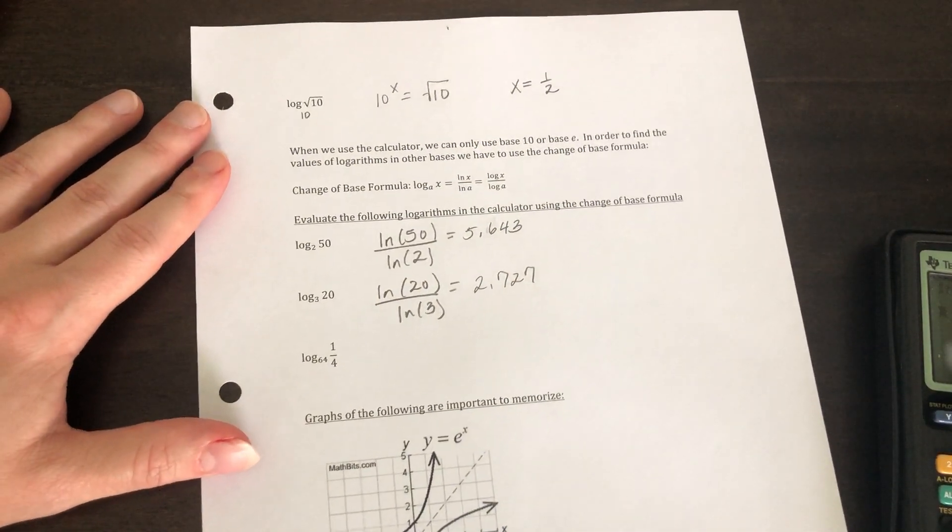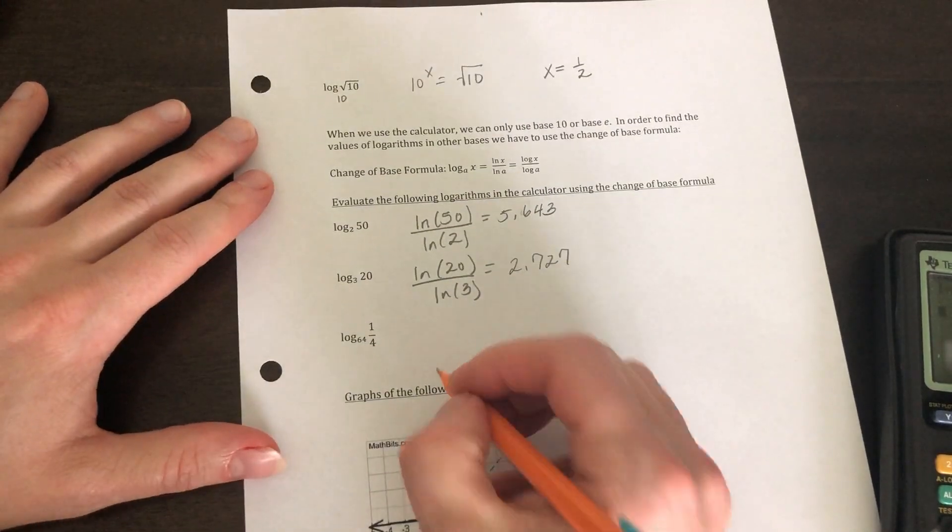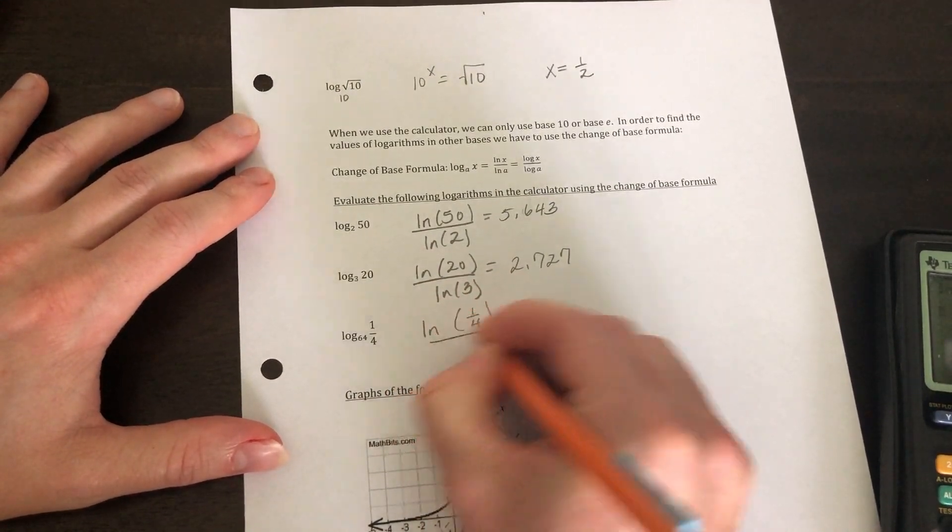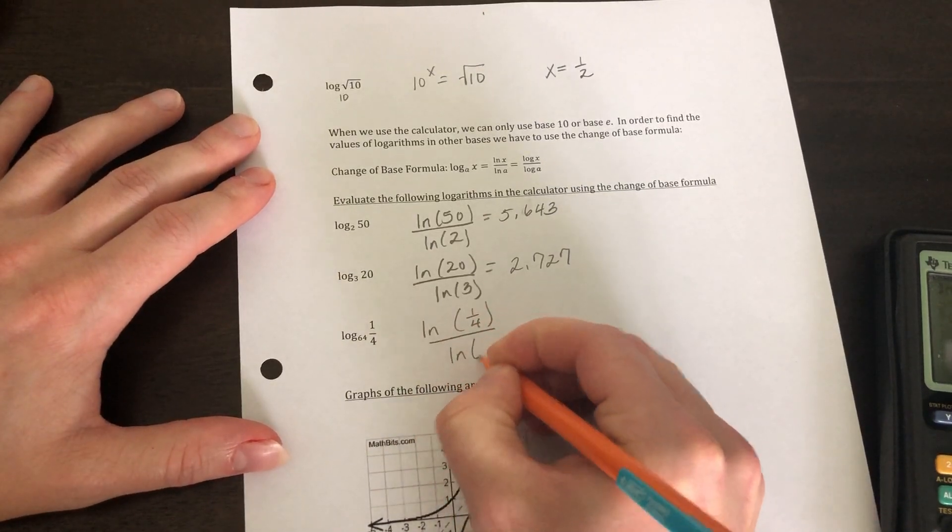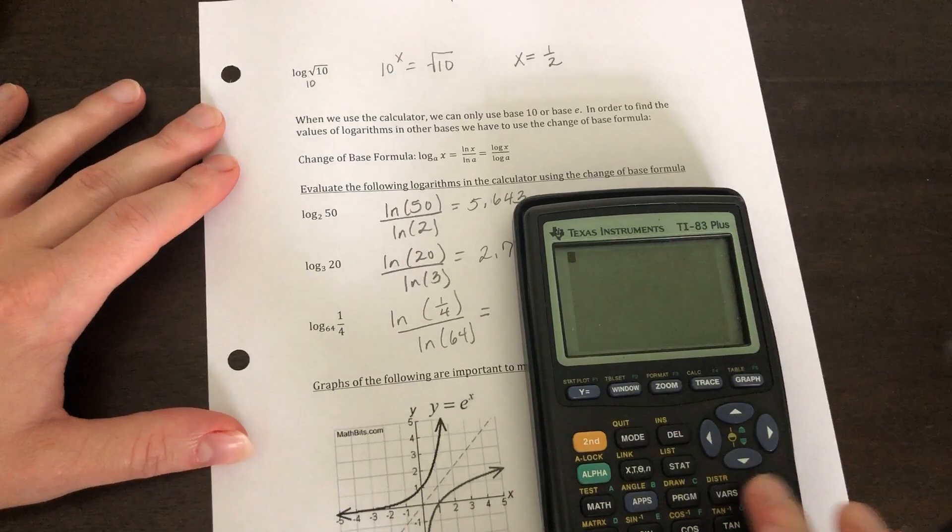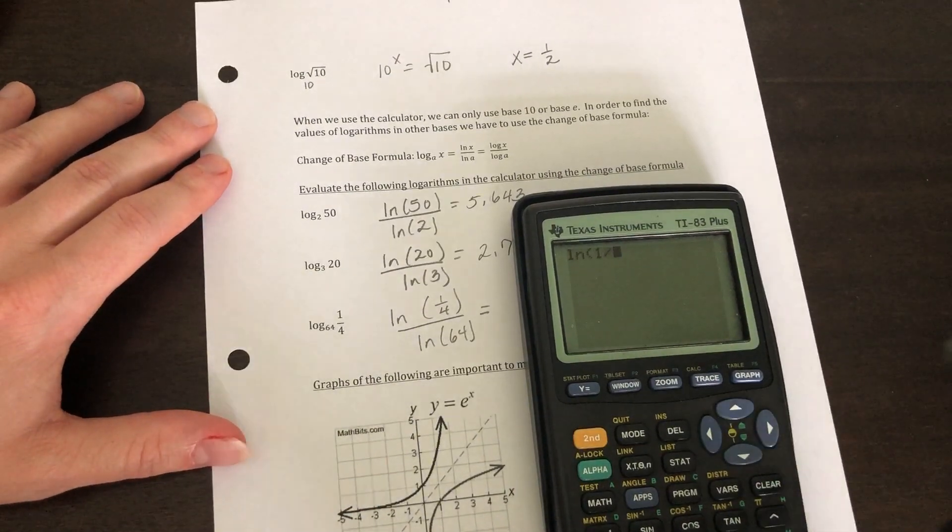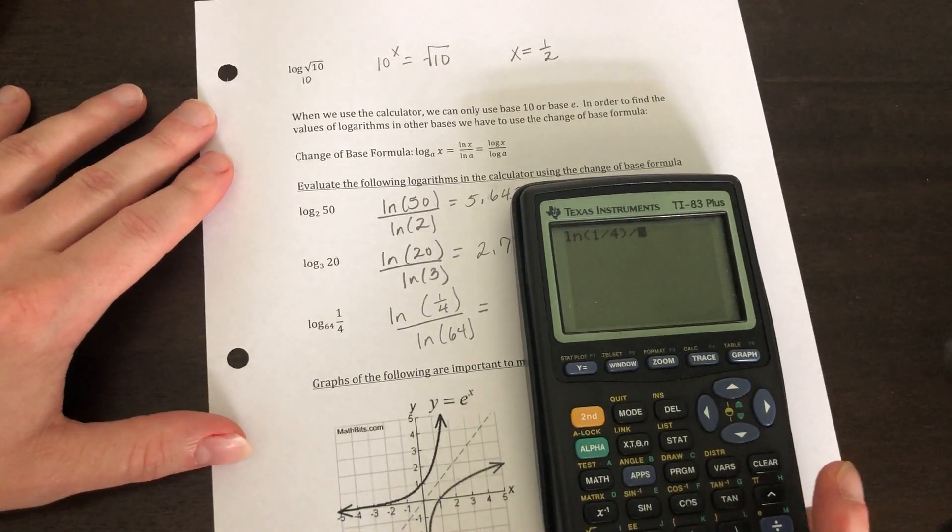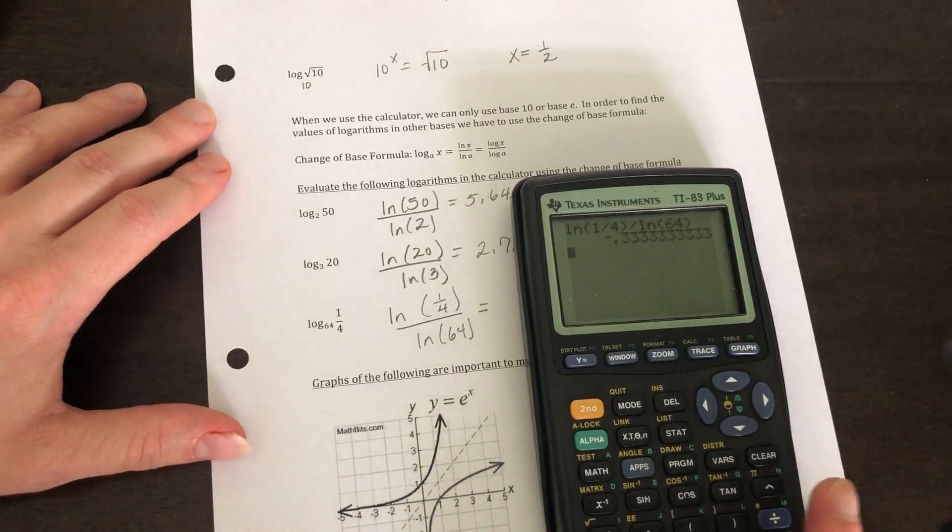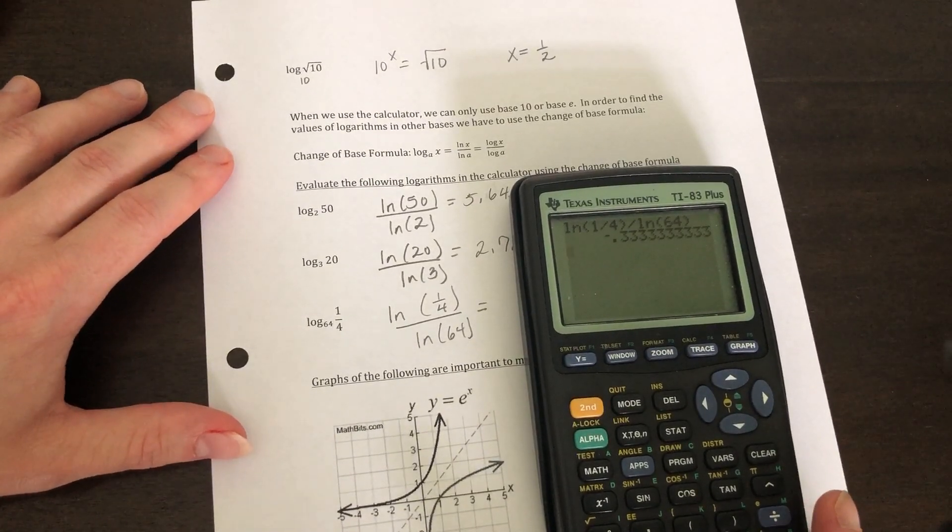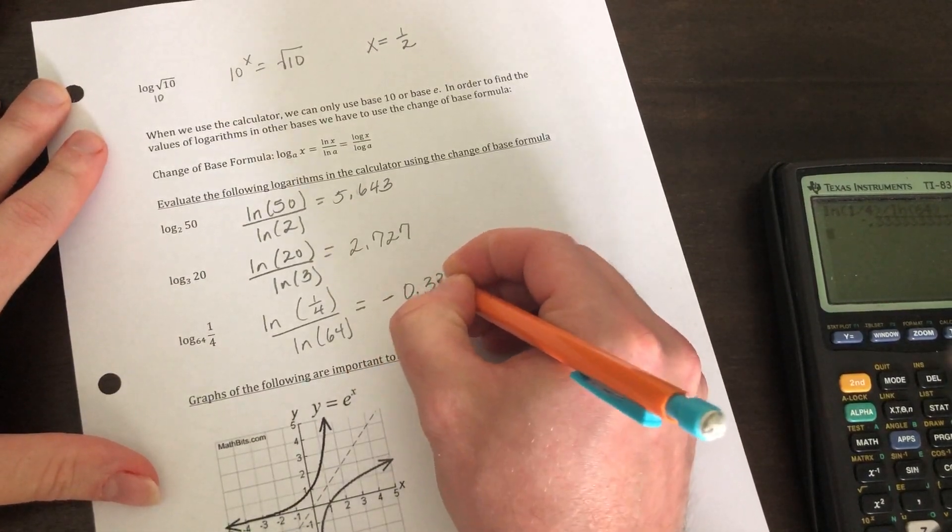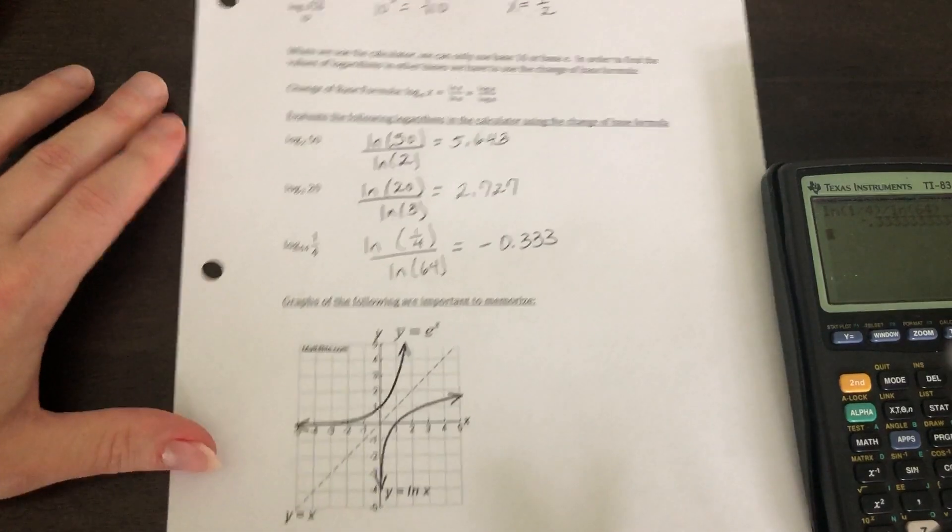And the last one, we would do natural log of one fourth divided by natural log of 64. And make sure you're closing your parentheses correctly, just like I am. So you get negative one third. Okay, negative 0.333. You'll be able to use a calculator on that one.